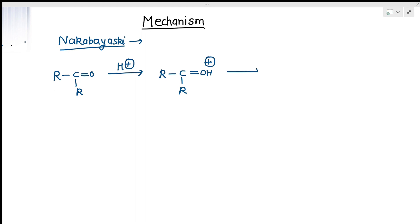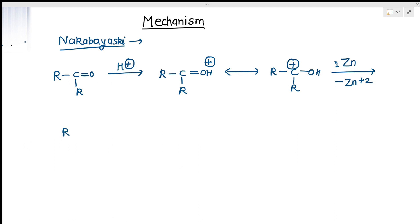The carbonyl group gets protonated with the help of protons from the acid. This intermediate is resonance stabilized. It then receives electrons from zinc, and zinc is converted to Zn²⁺, giving R-C(OH)(H)-R with a negative charge. This intermediate then gets protonated again.